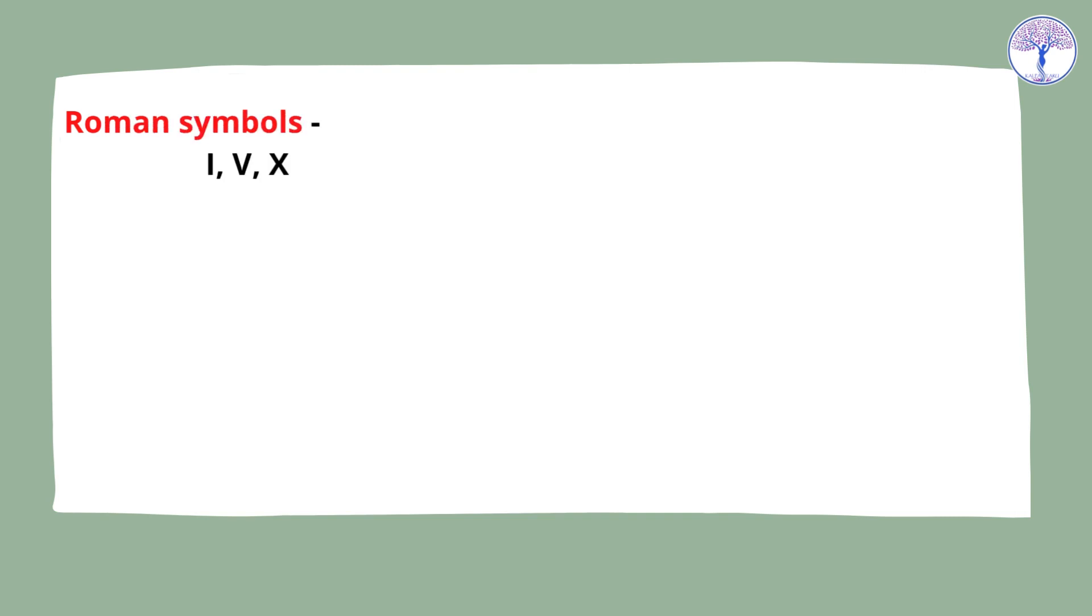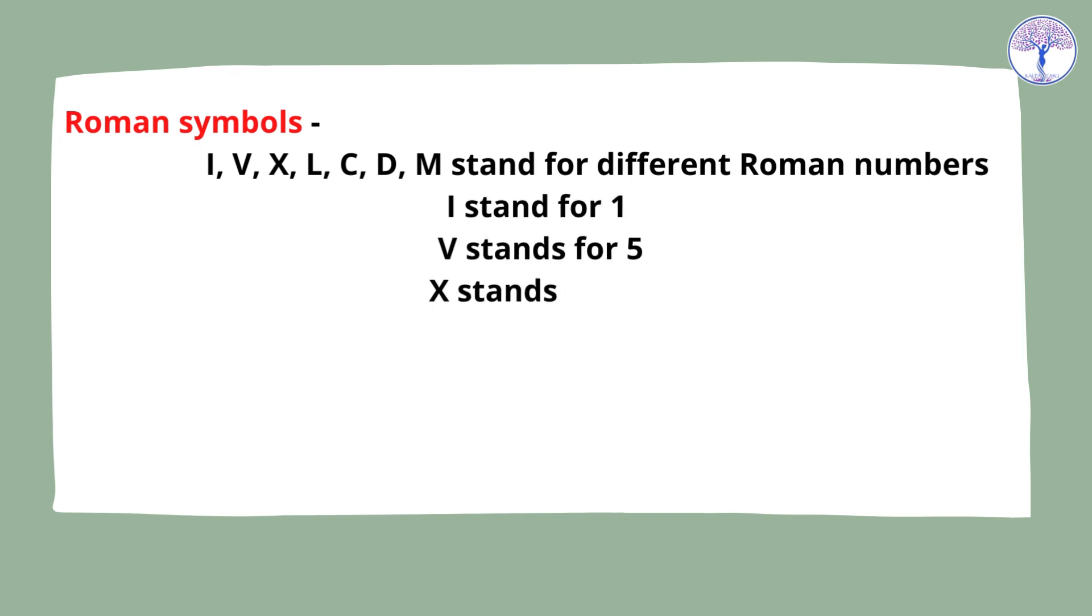I, V, X, L, C, D, M stand for different Roman numbers. I stands for 1, V stands for 5, X stands for 10, L stands for 50, C stands for 100, D stands for 500, M stands for 1000.